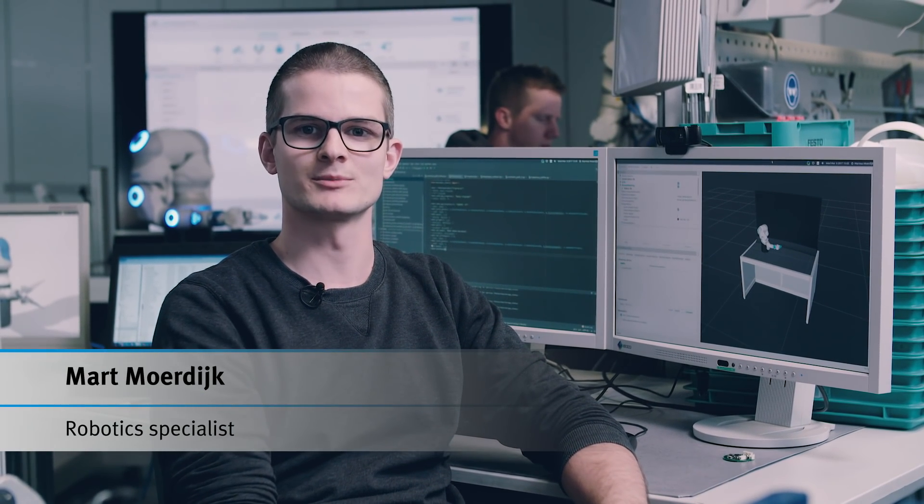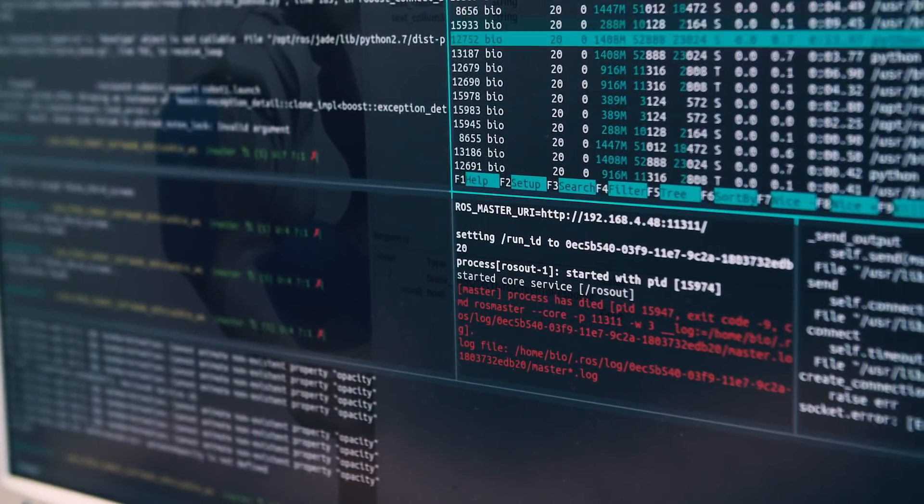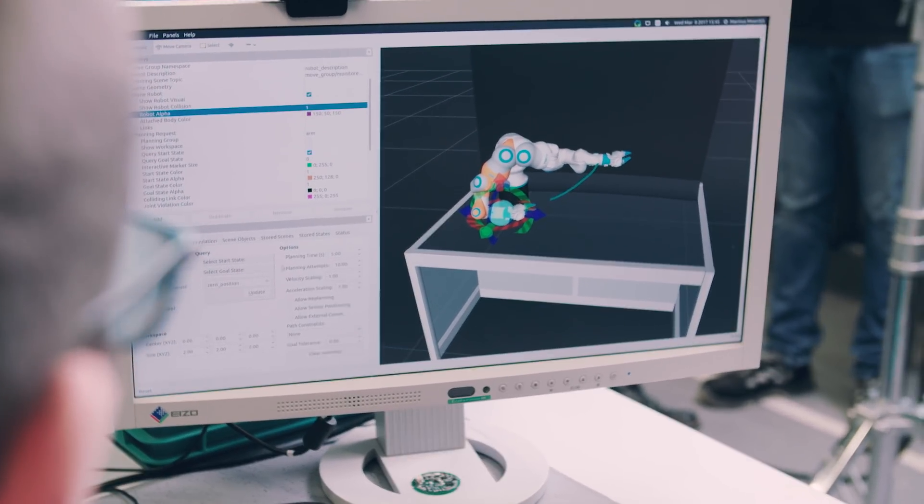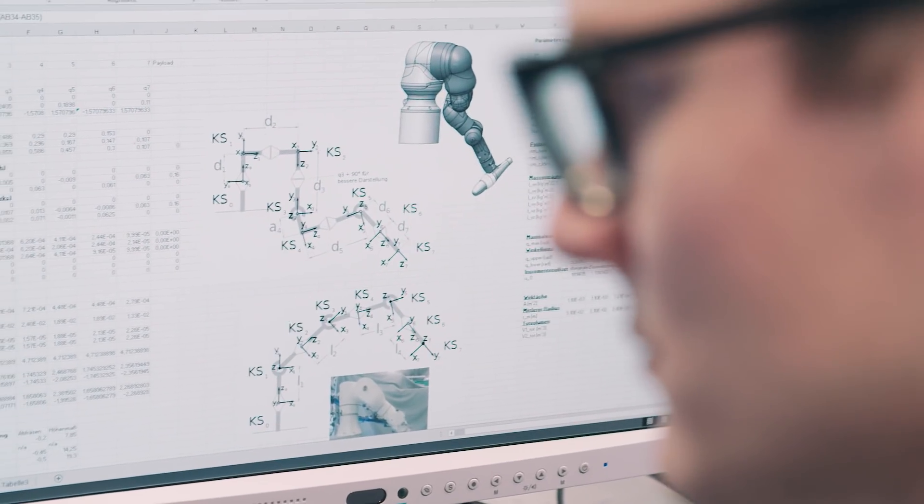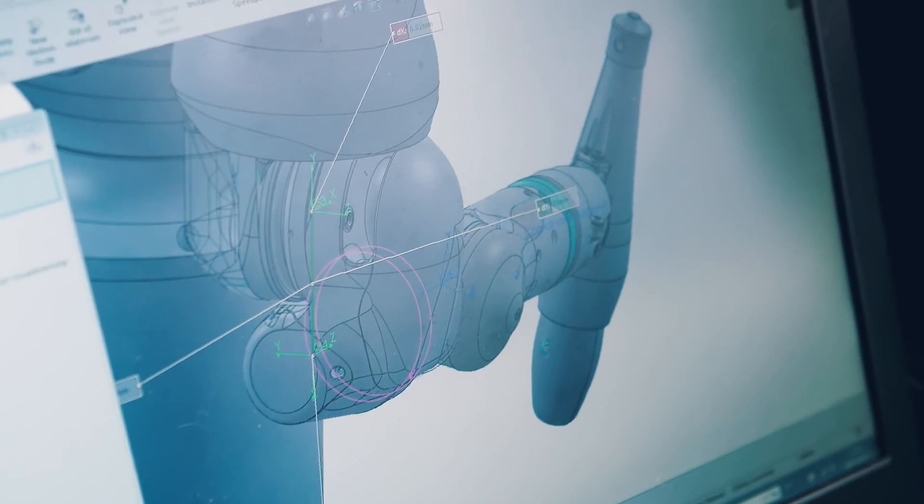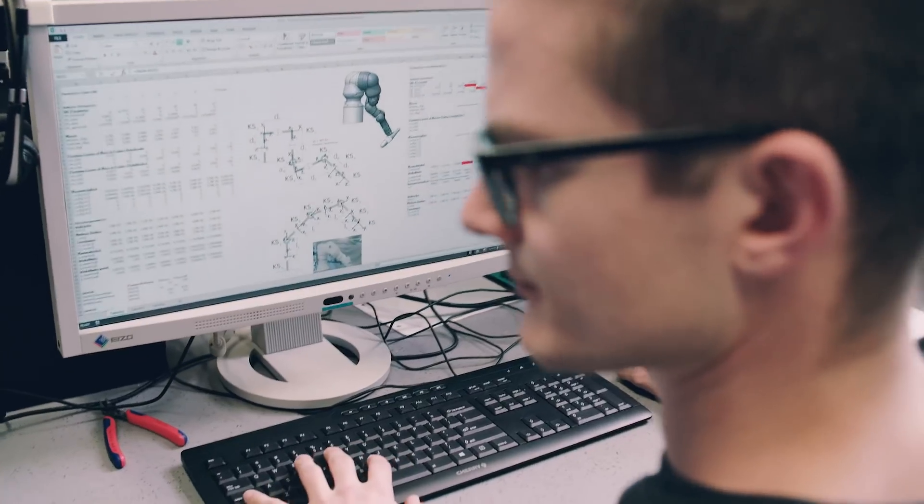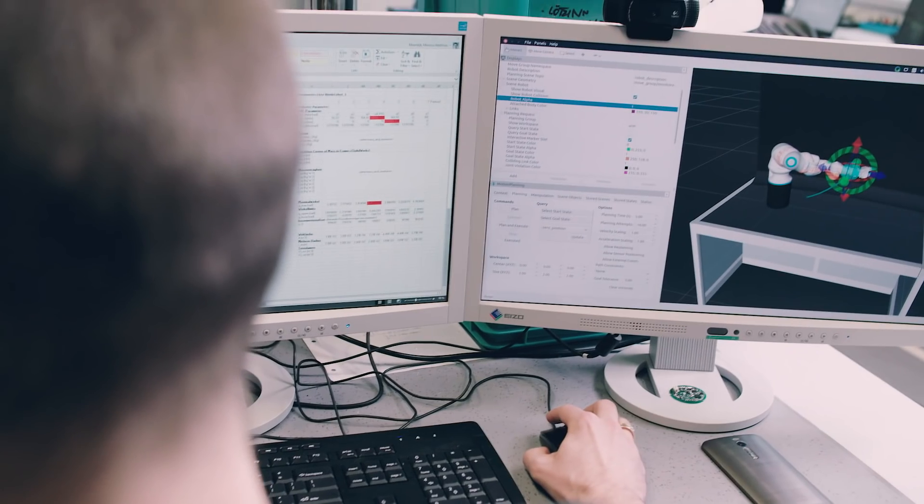Once the user has programmed a program in the user interface, the program must be interpreted so that the robot can also execute it. To do this, we use ROS, the robot operating system. This operating system needs a kinematic description of the robot, however, in order to make the transformation. We created this kinematic model using our CAD data and transferred it to ROS. ROS can use this kinematic model to calculate the articulation values.